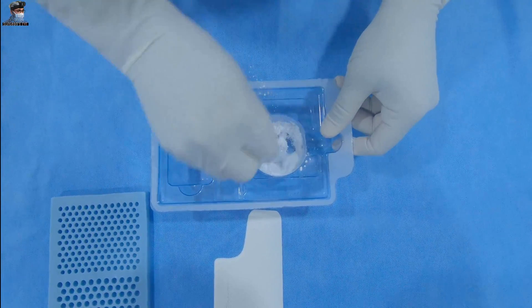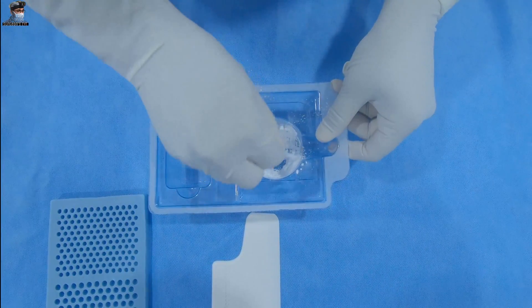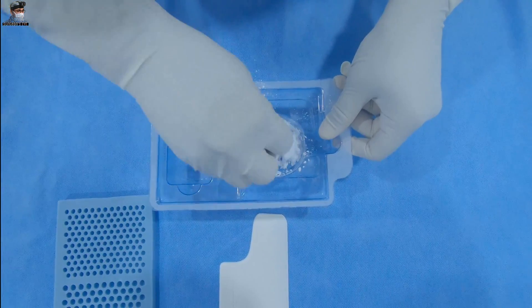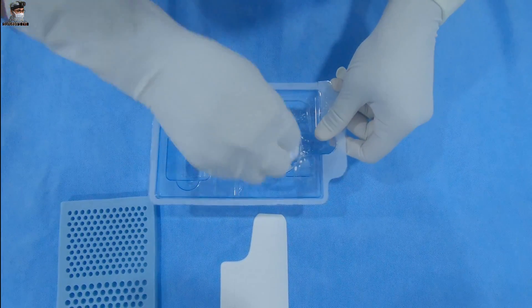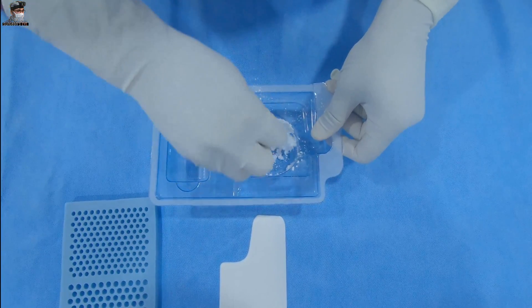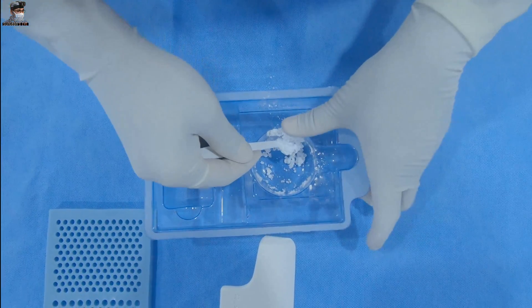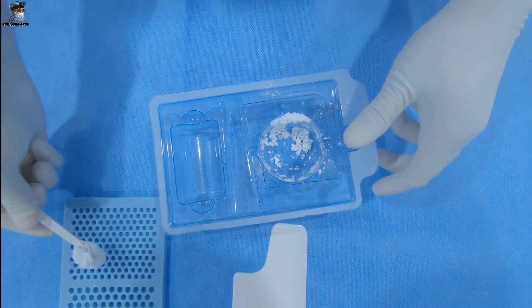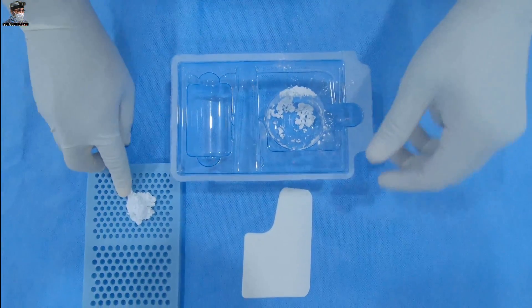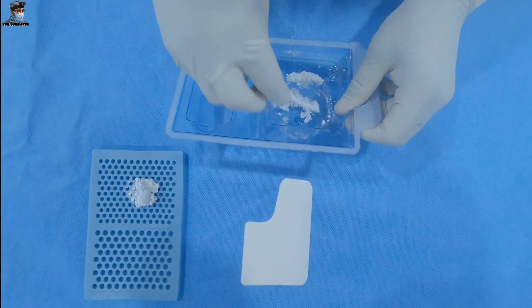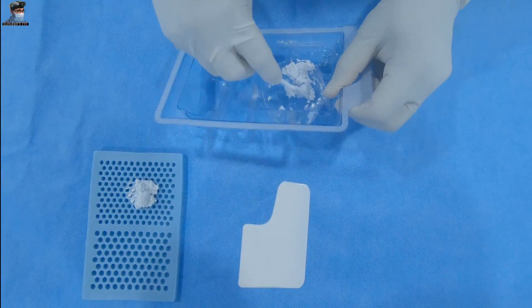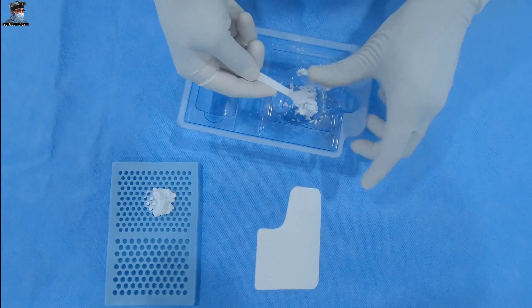Mix thoroughly until a smooth paste is formed, which will take approximately 30 seconds. Do not over-mix. Stimulan Rapid Cure has a working time of one to two minutes and will set approximately four minutes after mixing. Select the size of bead required and apply a uniform layer of paste onto the bead mat provided. Use the paste applicator to ensure complete filling of each bead cavity.